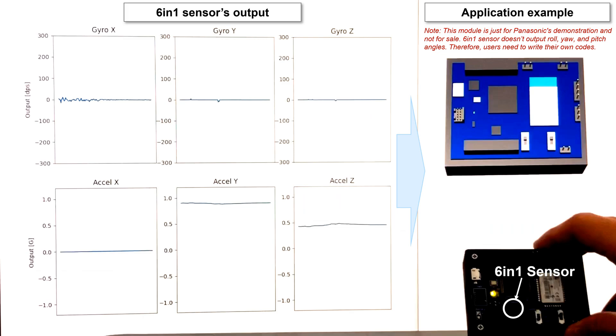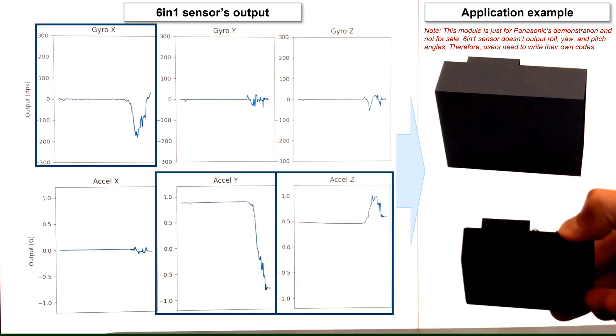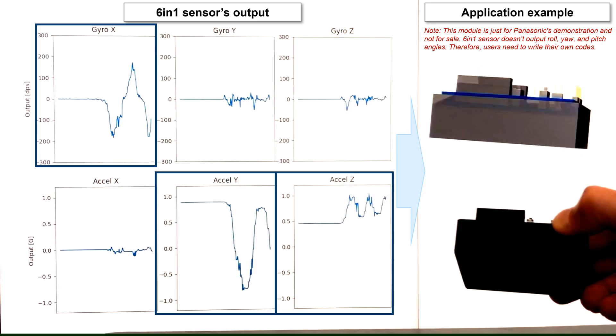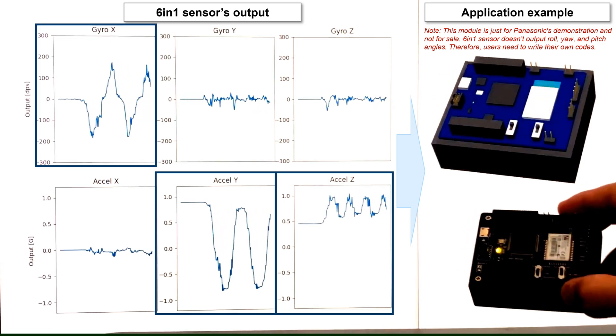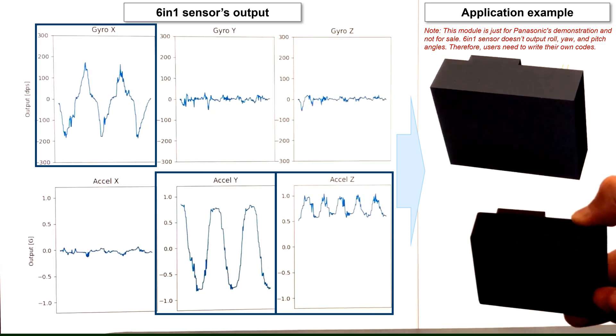Here is a demonstration of attitude detection using the 6in1 sensor. This is a roll detection. Gyrosensor X, accelerometer Y, and accelerometer Z are mainly used for this detection.